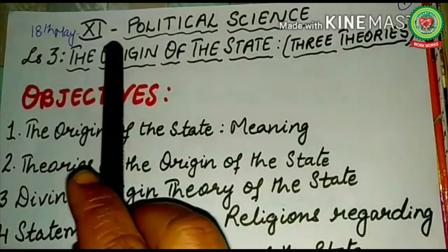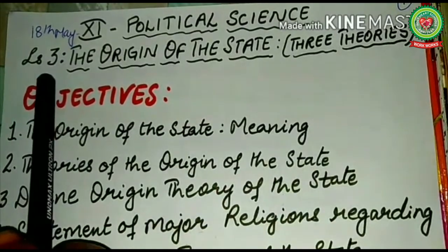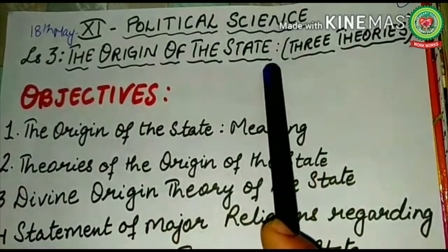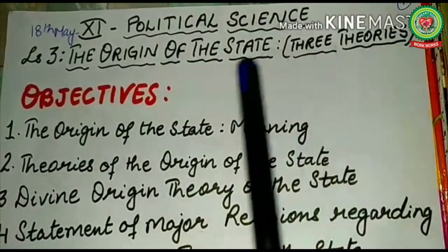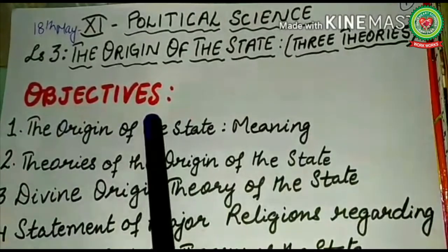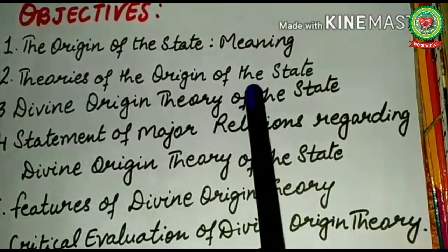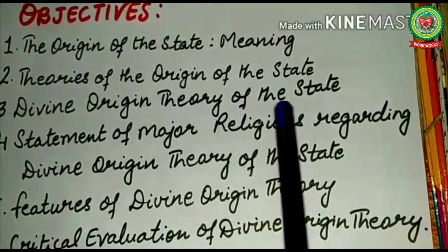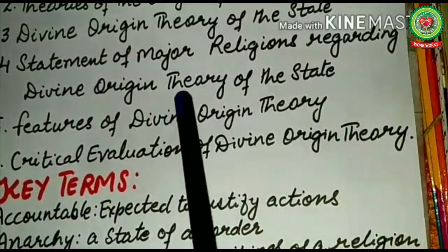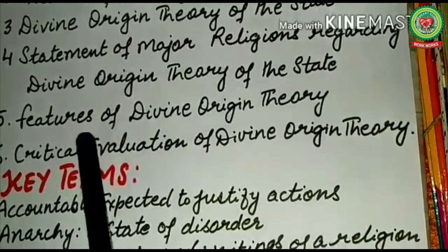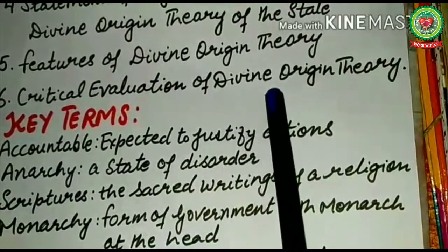Hello students, welcome to Class 1 Political Science. Today I will start Lesson 3: The Origin of the State. In this chapter I will discuss three theories of the origin of the state. The objectives of today's class are: the origin of the state, its meaning, theories of the origin of the state, divine origin theory, statement of major religions regarding divine origin theory, features of divine origin theory, and critical evaluation of divine origin theory.